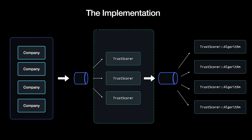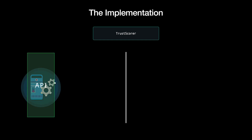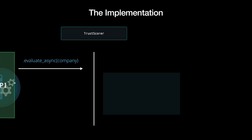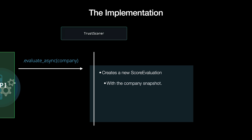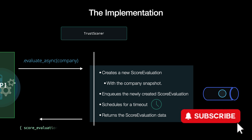Now, considering this architecture, let's dive into the implementation for the trust scorer and its algorithms. I'll assume that the queue implementation is already solved by some library, so we can focus on the business requirements. To enqueue a job, some place in your app or in the API endpoint will call a class method, evaluate_async, in the trust score class that receives company data. It creates a score evaluation and saves it to the database along with the company snapshot, enqueues the created score evaluation, schedules a future timeout, and returns the score evaluation data.